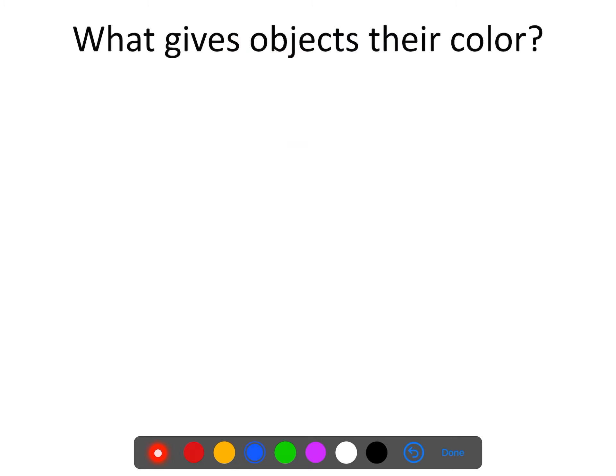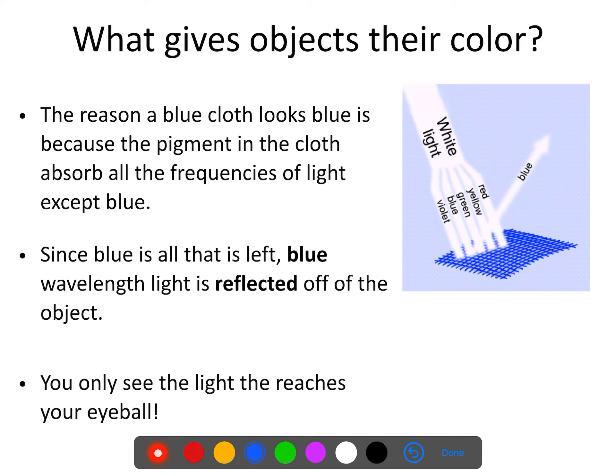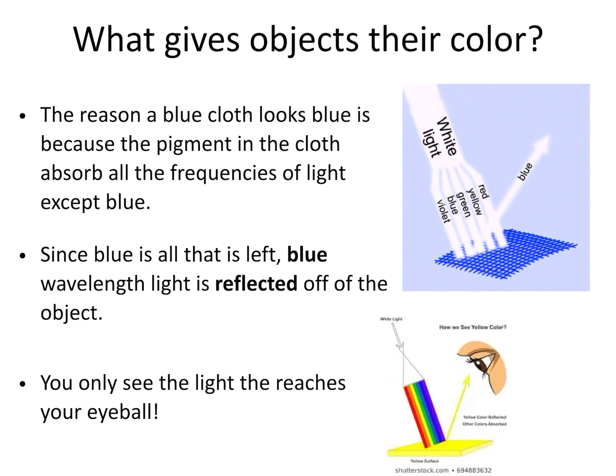The way that we know what color objects are is based off of what is reflected from that material. So I need you to understand, look down here at the bottom: you only see the light that reaches your eyeball. In this first illustration, we've got white light, which is a mixture of all the colors of light that shine down onto the object. That object is going to absorb everything except for blue. So blue bounces off the object and goes to your eyeball. So you received blue light. You interpret that as the color blue.